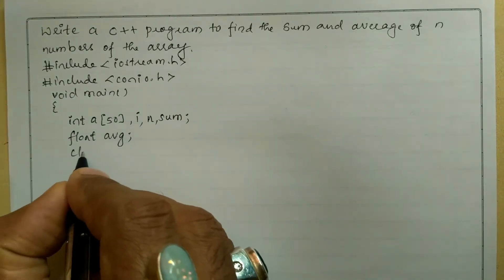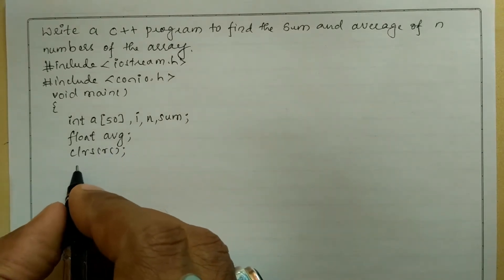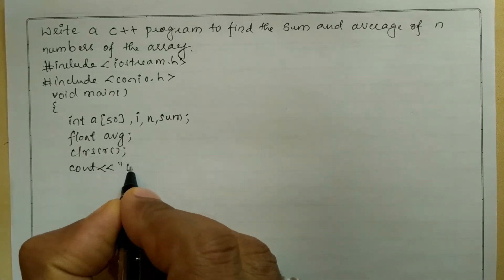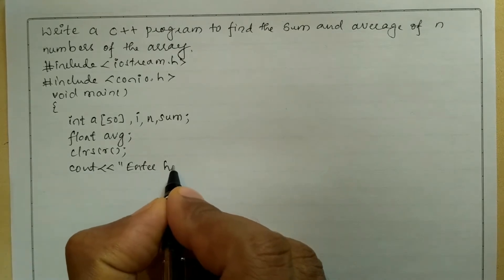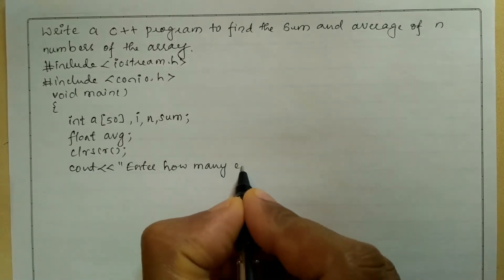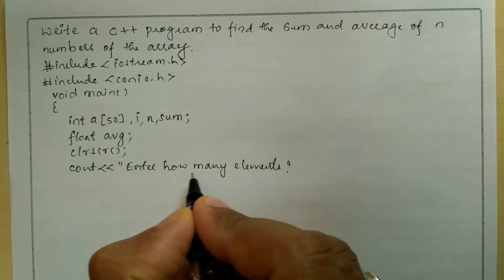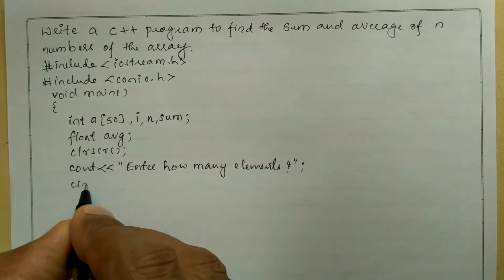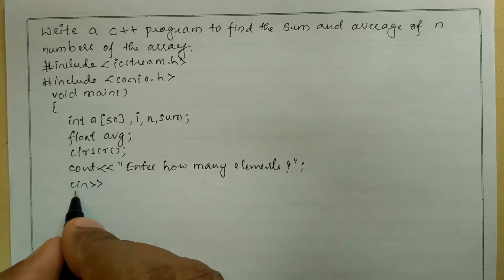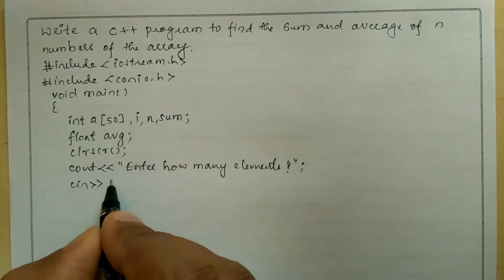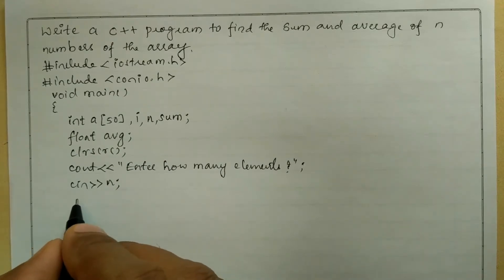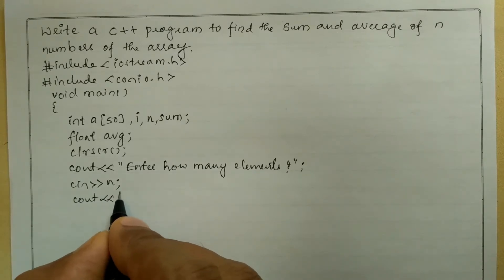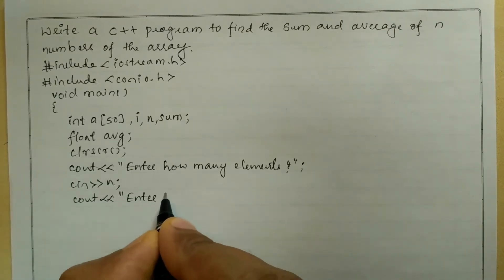Next we are going to write clrscr function which is used to clear the screen. Now we will ask the user how many elements using cout stream insertion operator — in double quotation mark I am going to write 'enter how many elements' — and put semi-colon. Now we are going to receive the response from the user through keyboard using cin stream extraction operator and we are going to take variable n. Next, I am going to ask the user to enter the elements using cout stream insertion operator — in double quotation mark I am going to write 'enter the elements'.